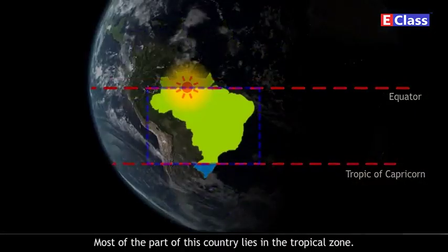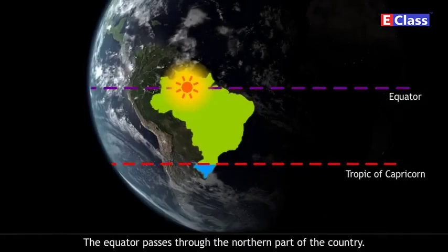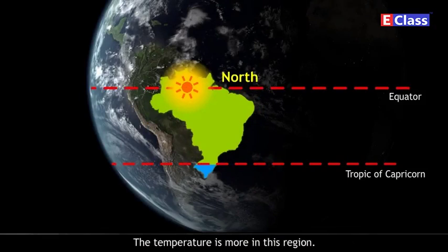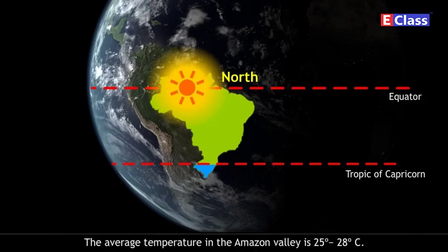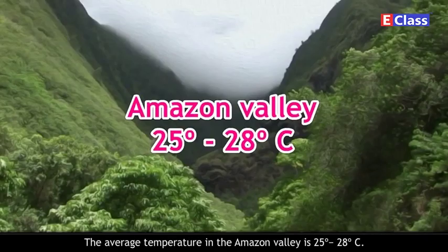Most of this country lies in the tropical zone. The equator passes through the northern part of the country, making temperatures higher in this region. The average temperature in the Amazon Valley is 25°C to 28°C.